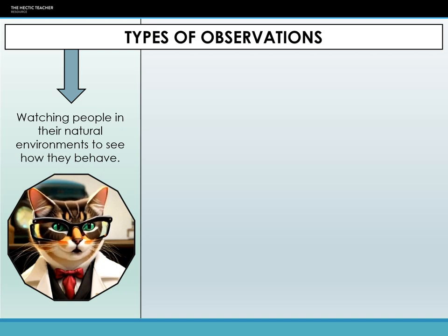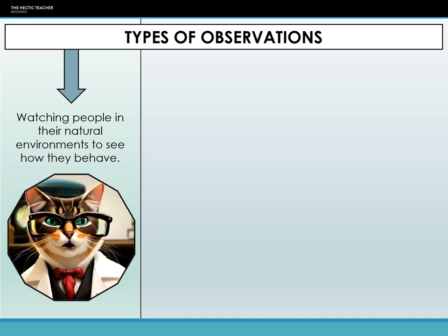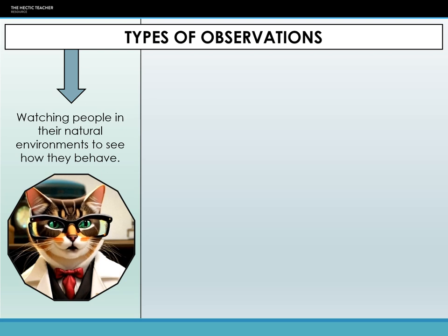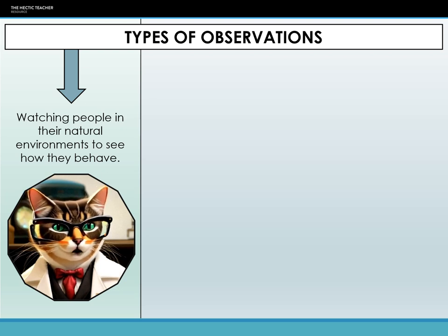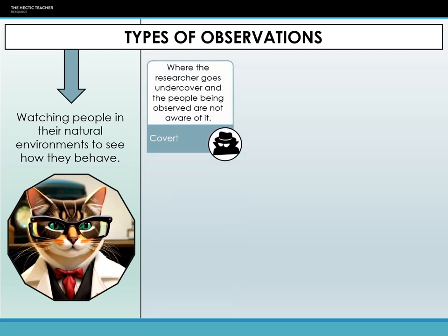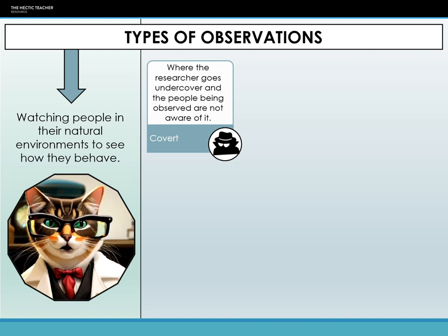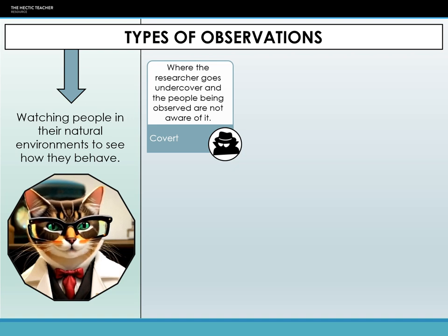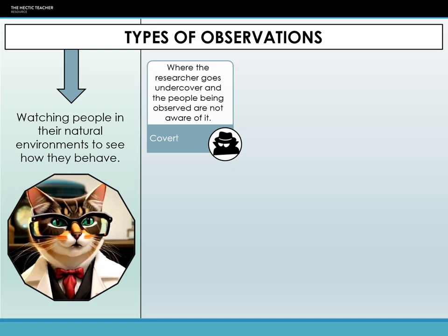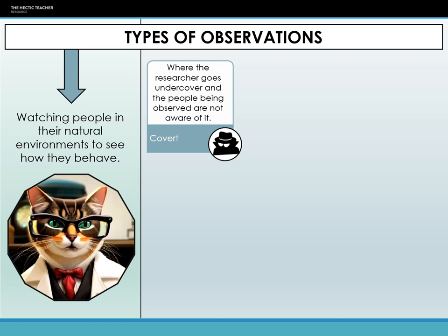It is like a pick-and-mix deciding which combination works best for that particular research — for example, using a structured, non-participant overt observation. Covert observation is a method where the individuals being observed aren't aware of it — think of it as being a silent observer in the background. Remember Lord Humphrey's study in the 70s, The Tearoom Trade, where he discreetly observed men in public restrooms to delve into anonymous male-to-male encounters.